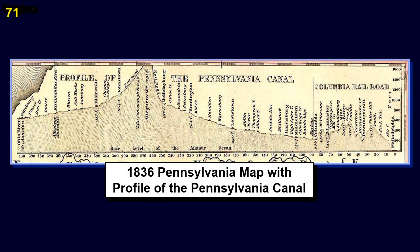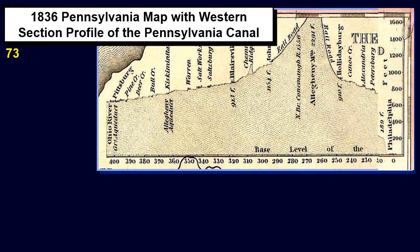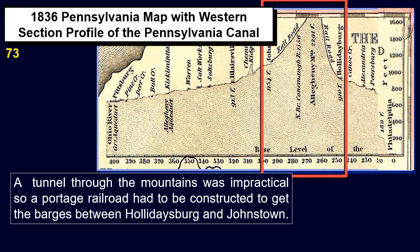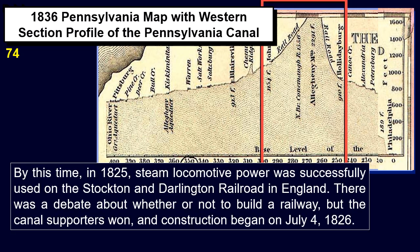This is an 1836 Pennsylvania map with the profile of the Pennsylvania Canal, showing the rough terrain of the Allegheny Mountain region just before reaching Philadelphia. A tunnel through the mountains was impractical, so a portage railroad had to be constructed to get voyages between Hollidaysburg and Johnstown. By 1825, steam locomotive power was successfully used on the Stockton and Darlington Railroad in England. There was debate about whether to build a railway, but the canal supporters won, and construction began on July 4, 1826.